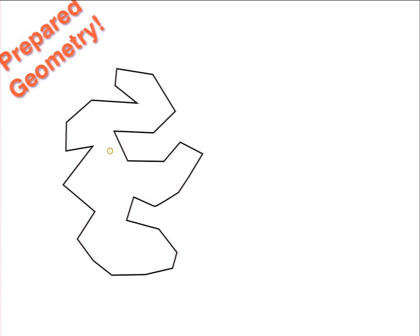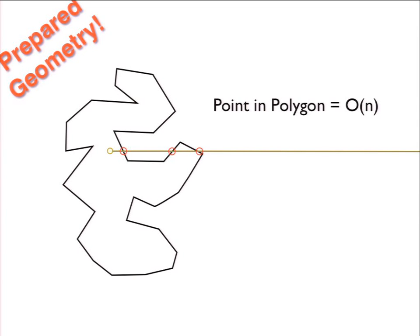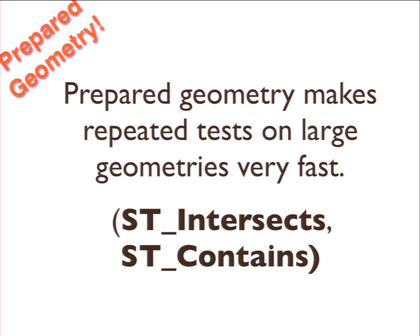In a naive point-in-polygon test, you'd do a ray trace and iterate through all the rings. Instead, PostGIS can use an overarching index on the object — instead of order-N checking every edge, we do order-log-N by building an index on top of the object. This is called prepared geometry. You don't need to know this to use it — it just happens magically underneath.